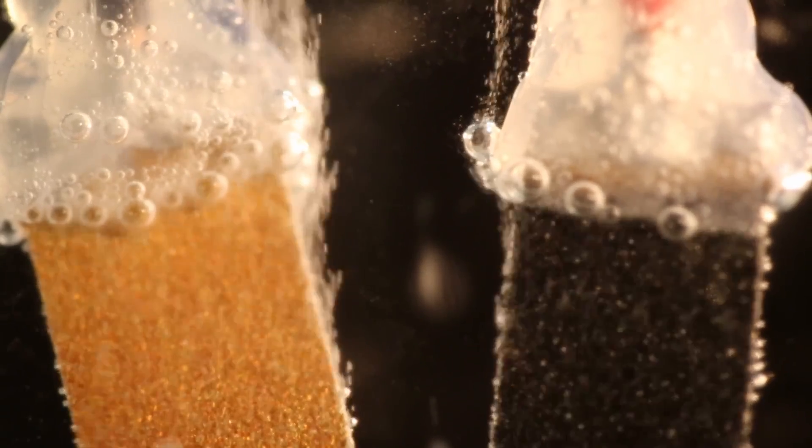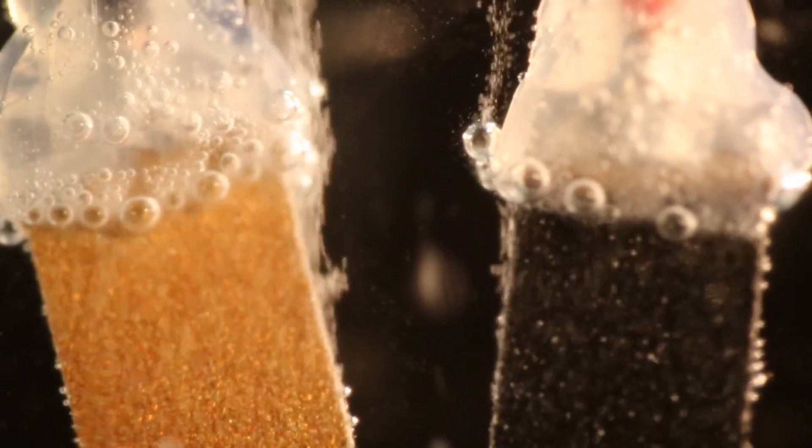By combining the perovskite solar cell with this catalyst, the system is very low-cost, but we've achieved 12.3 percent solar-to-hydrogen efficiency.